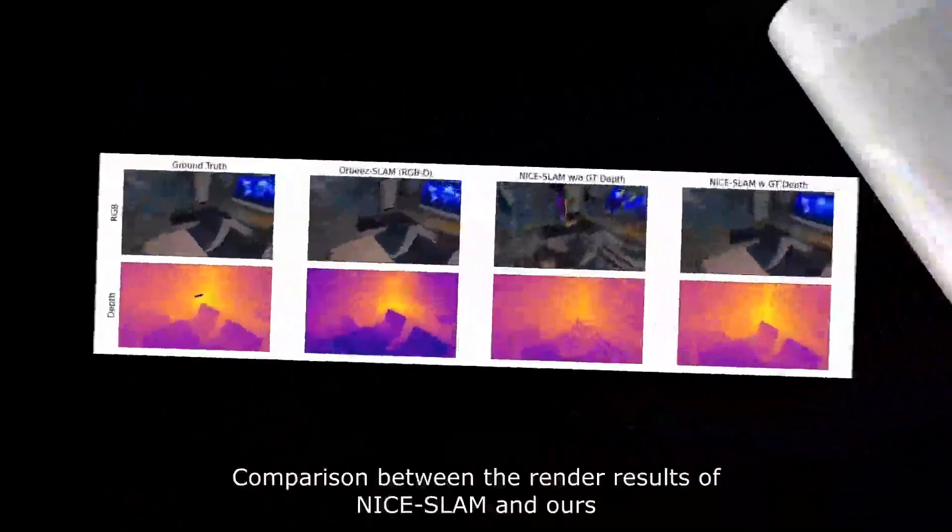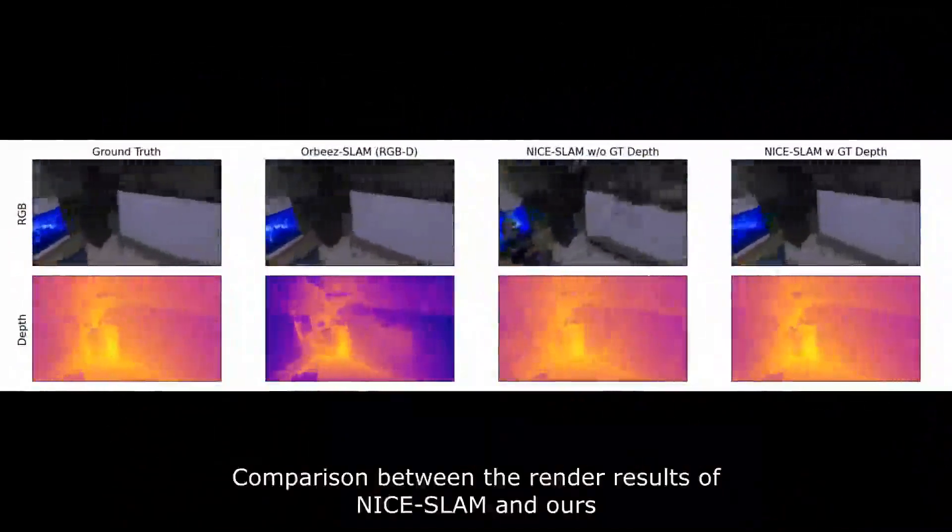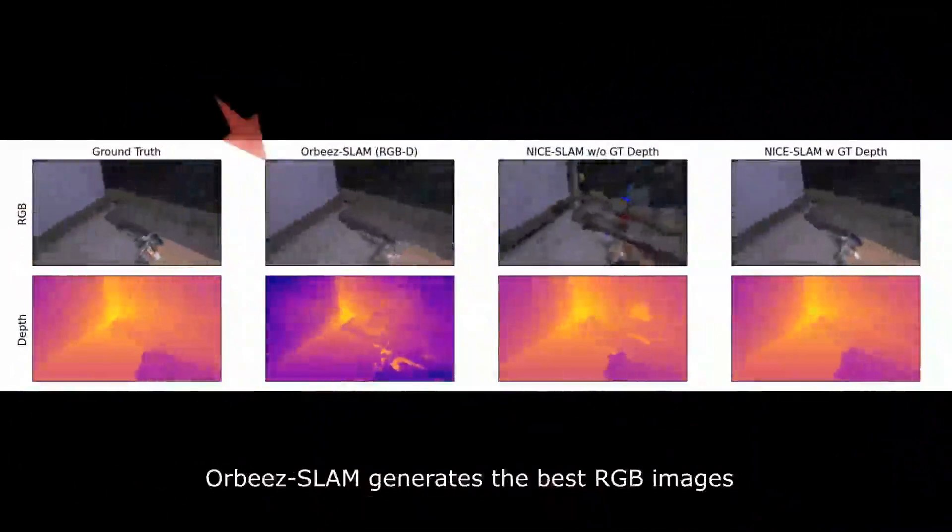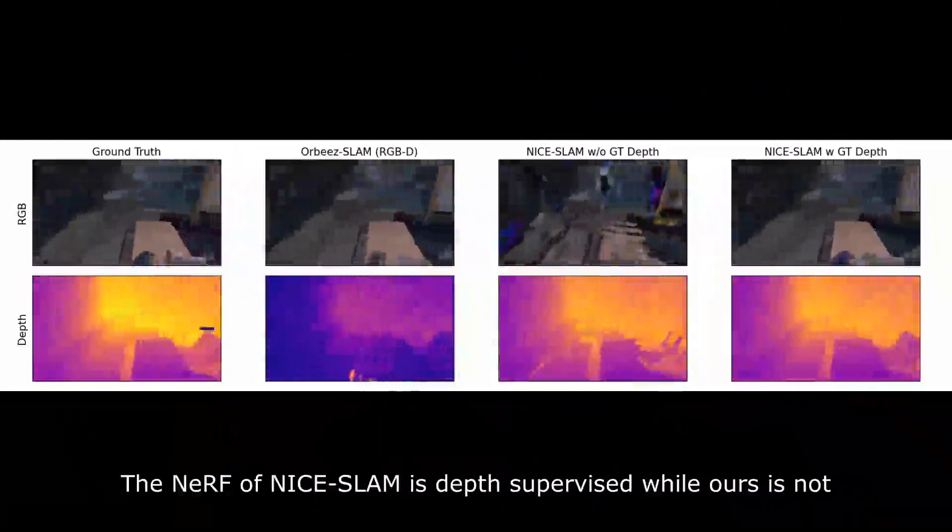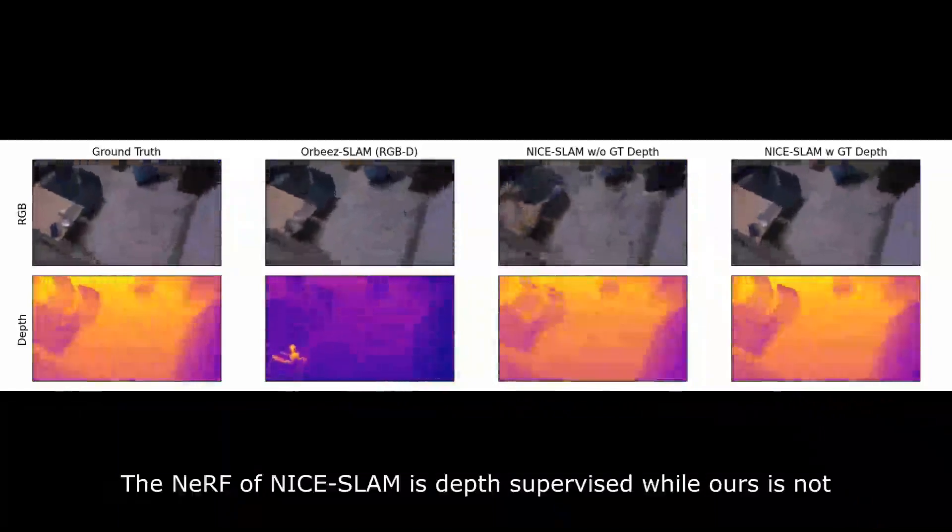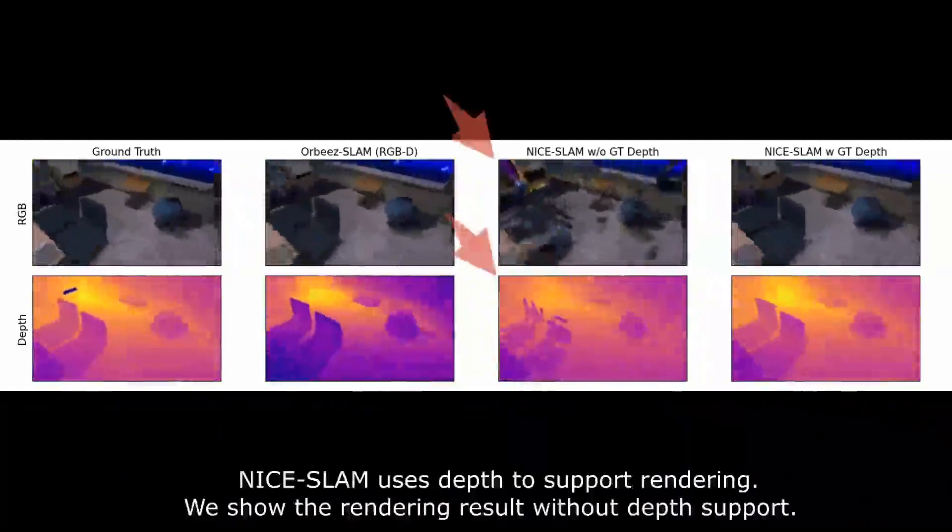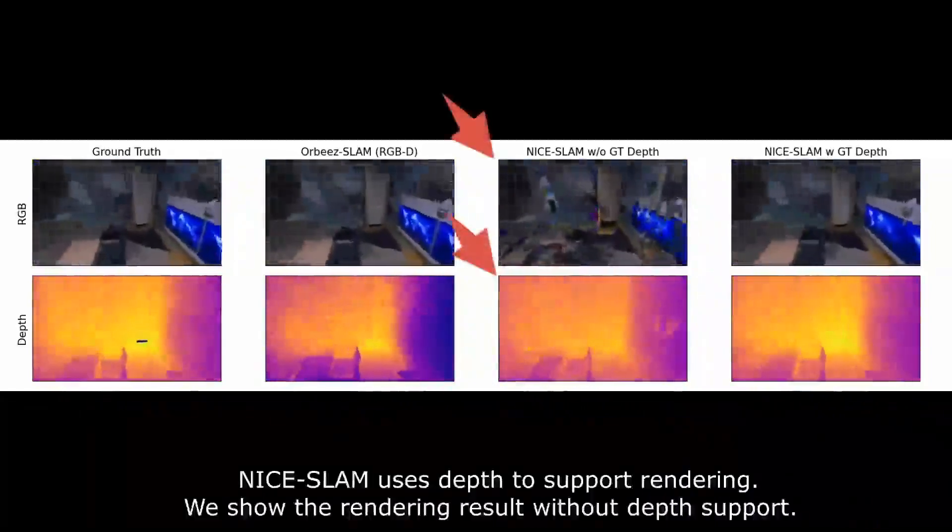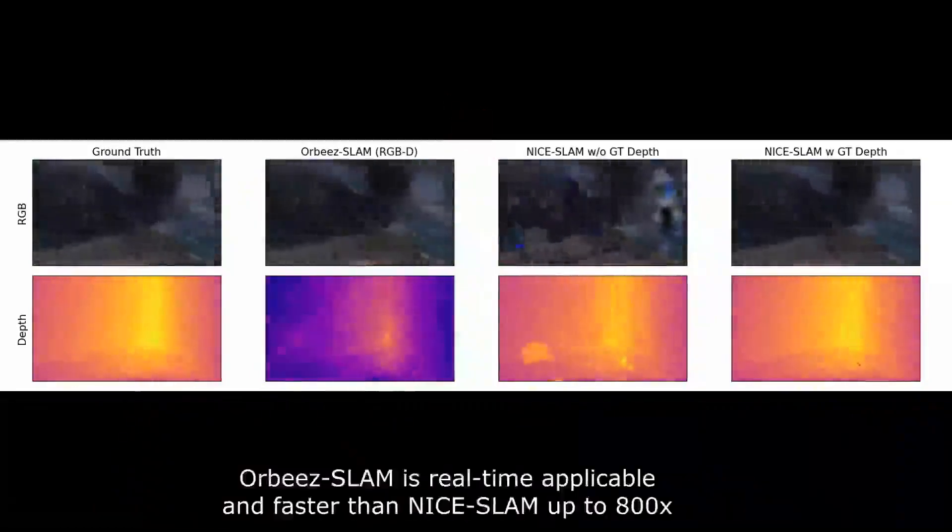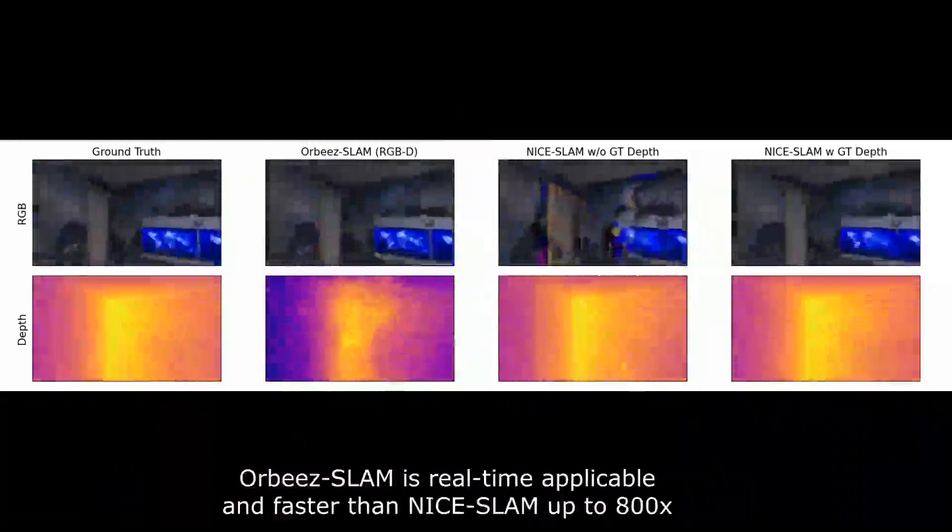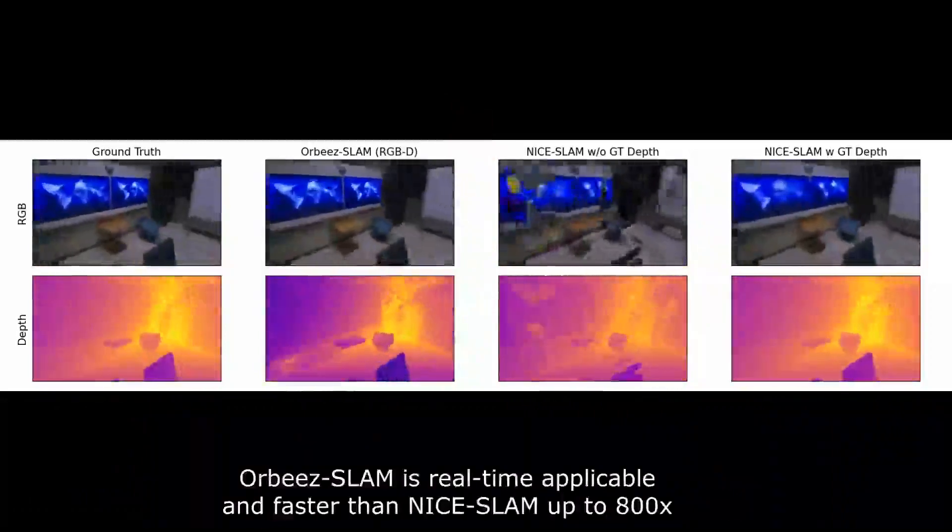Comparison between the render results of NICE-SLAM and ours. Our visual SLAM generates the best RGB images. The NeRF of NICE-SLAM is depth supervised, while ours is not. NICE-SLAM uses depth to support rendering. We show the rendering result without depth support. Orbeez-SLAM is real-time applicable and faster than NICE-SLAM up to 800 times.